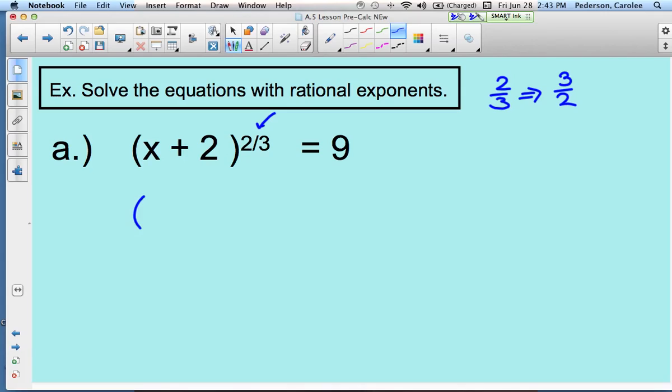So here's what happens. We have this original x plus two in parentheses, and then we have two-thirds. If we multiply by its reciprocal, three-halves, we must also do it to the other side.